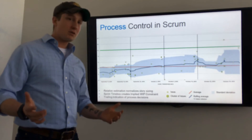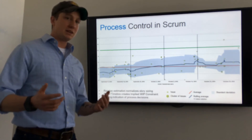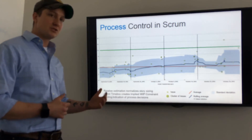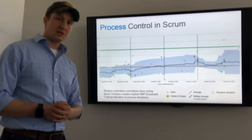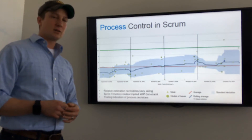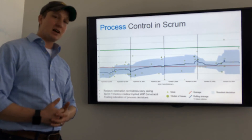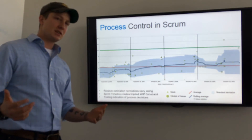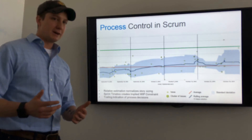In Scrum, you're timeboxing to two to four weeks, so your process is in control as long as your stories are around half the cycle time of a sprint, with the standard deviation of roughly the same amount.